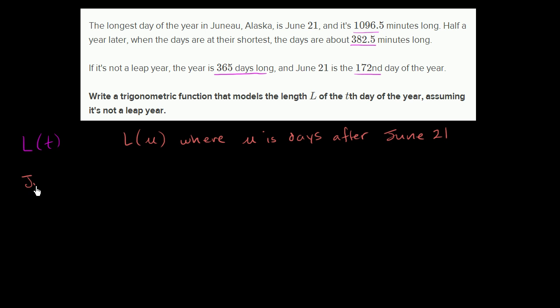Let's just think about this. June 21st, if we're thinking in terms of U, U is going to be equal to 0, because it's 0 days after June 21st. But if we're thinking in terms of T, June 21st is the 172nd day of the year.